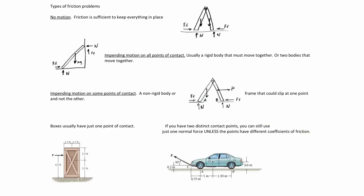There are many types of friction problems, and we're going to put all the ones we consider into three general types. The first is where there is no motion occurring at all — the friction is sufficient to keep the object in place. For example, an A-frame with forces and normal forces has friction to keep it in place, but since it's not moving, the force of friction is not mu times normal; it is just a reaction force less than mu times normal.